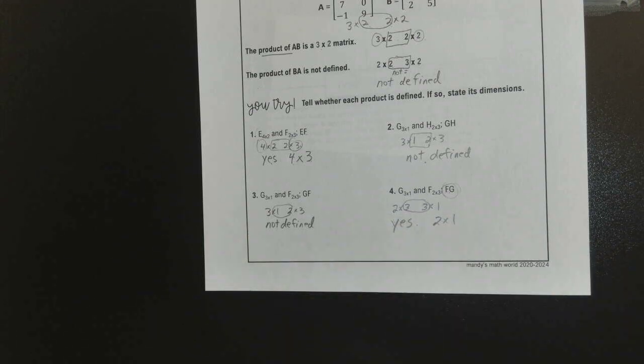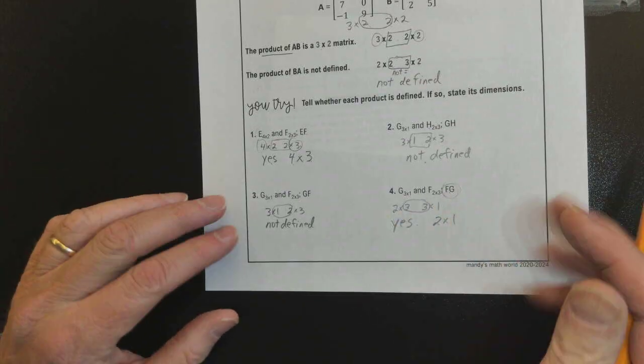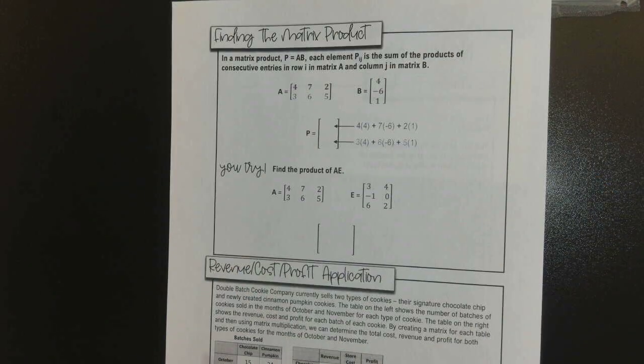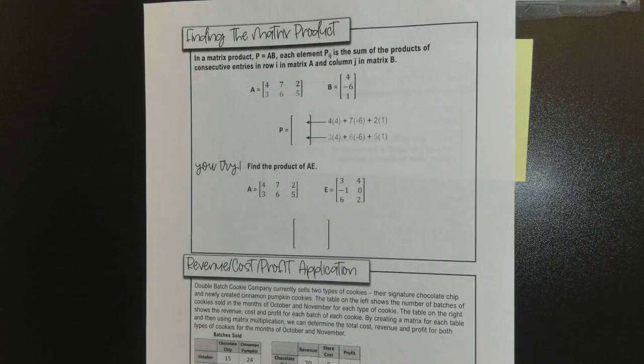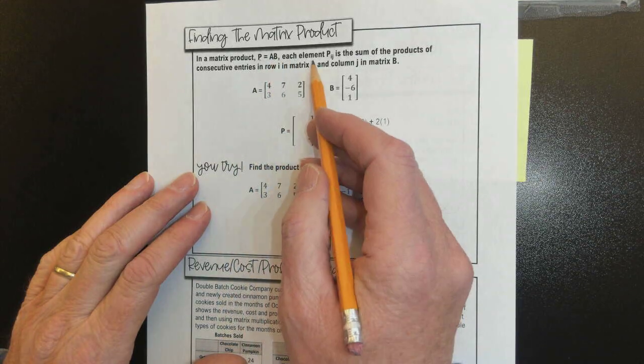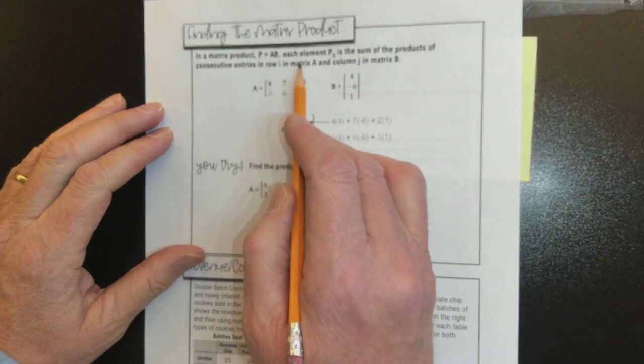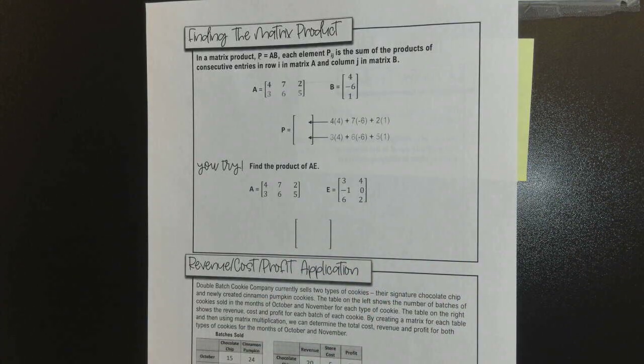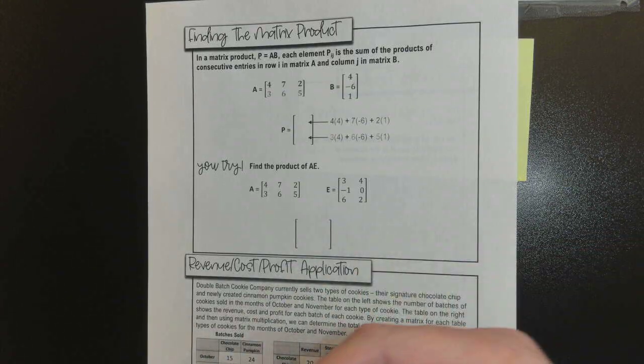So, that is this to get us started. Now we're going to actually get into how to actually do the multiplying. But before you do the multiplying, you got to know if it will work or not. And how big your answer is going to be. Alright. So, turn it over here. We got a couple of examples to look at. In a matrix product, P is representing the product matrix, equals A times B. Each element, P I J is the sum of the products of consecutive entries in row I in matrix A and column J in matrix B. That's true. Now you read that and you think, well, it makes perfect sense. Let's just do it. Does everybody know how to do it? Just reading that? No? Okay.